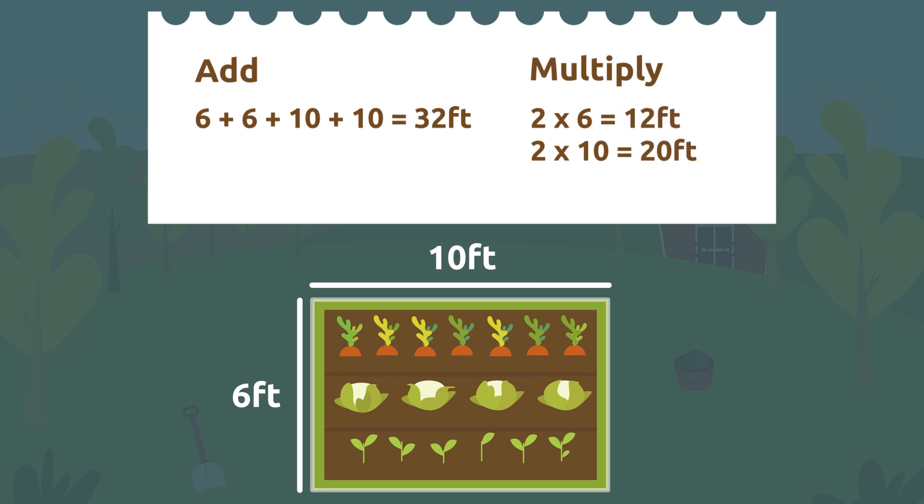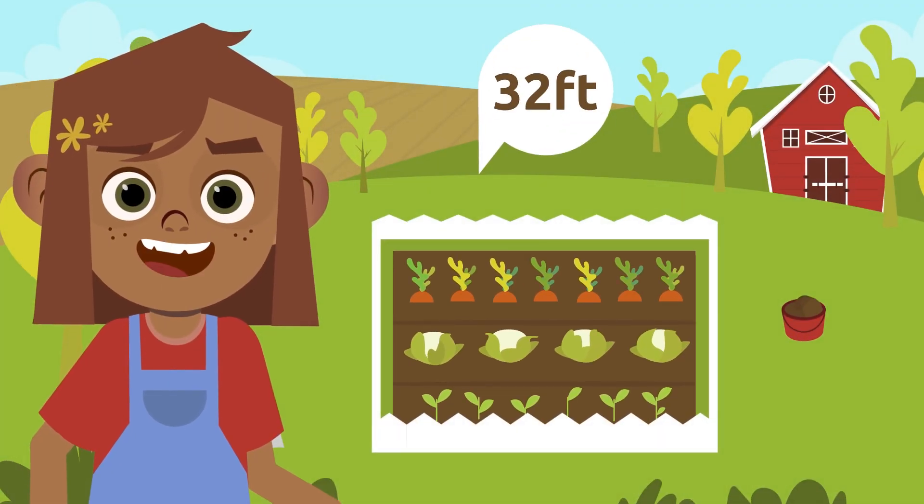And now we add the results: 12 plus 20, which equals 32. Great! Anna needs to buy 32 feet of fencing material to fence her vegetable garden.